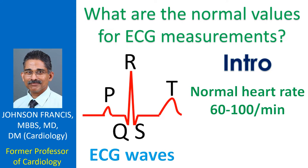To start with is the simple measurement of heart rate from the ECG. Normal range of heart rate is taken as 60-100 per minute in an adult in the resting state. A newborn infant can have a resting heart rate around 140 per minute, which comes down gradually as age advances to reach the adult range.